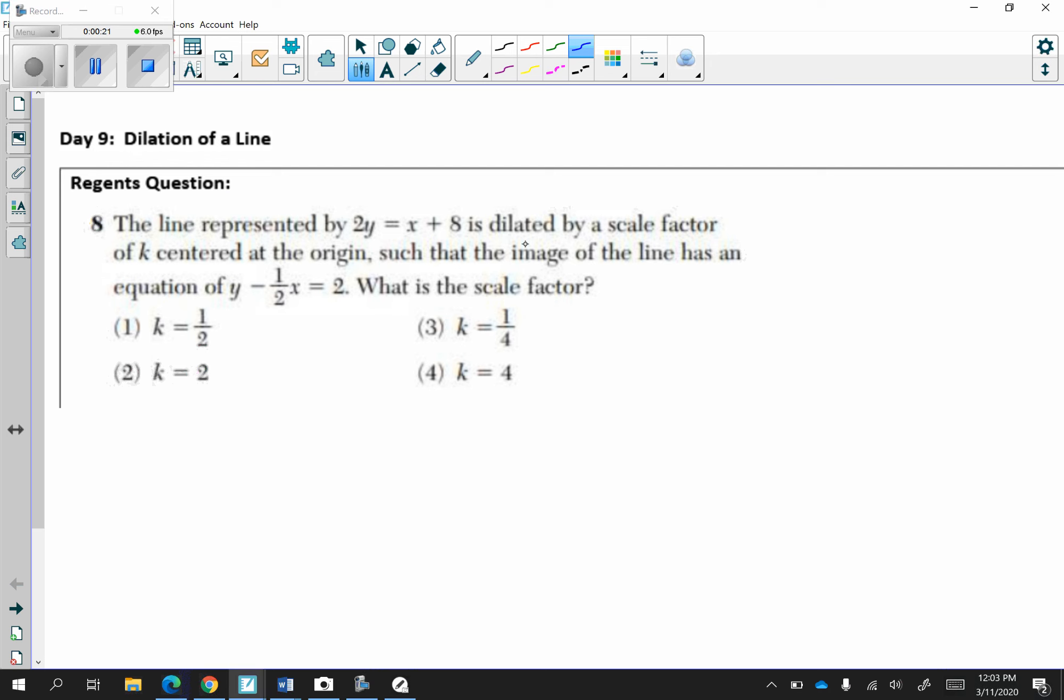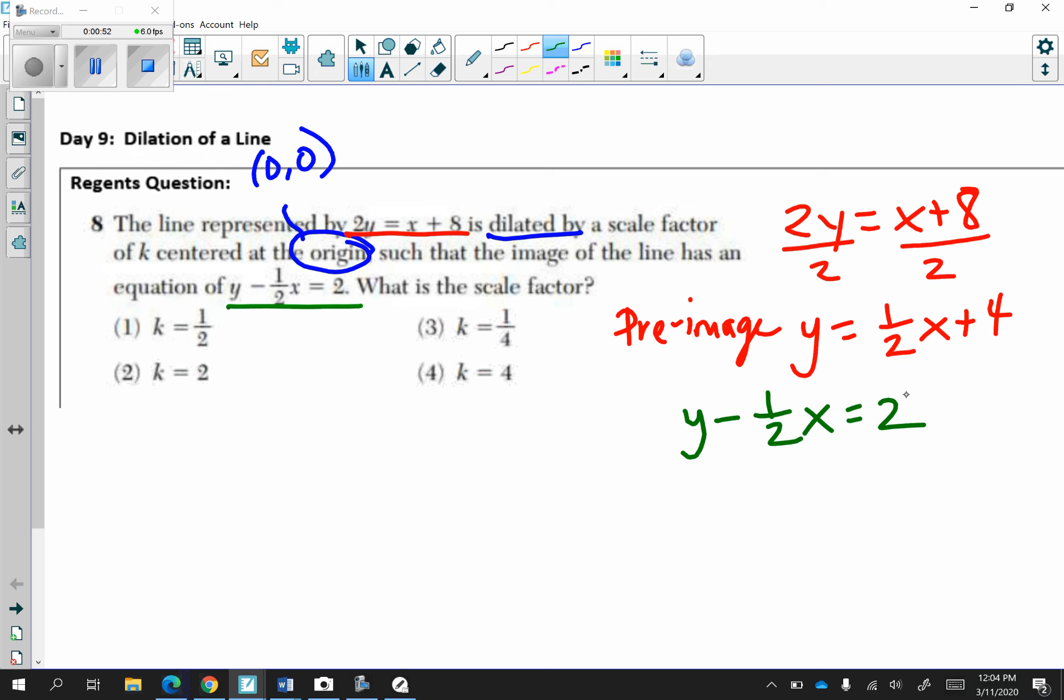So I have a dilation by a scale factor of k, which we don't know, centered at the origin, which we know is 0, 0. And I'm going to take 2y equals x plus 8 and get it in terms of y by itself. This is my pre-image. Next, I'm going to take the next equation, which is my image, and I'm going to get y by itself by adding over the one-half x. And this is my image.